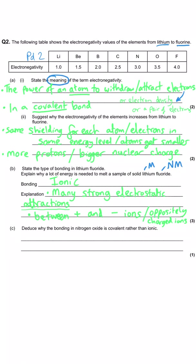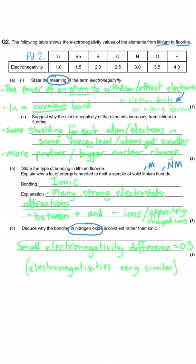The final part of this question says deduce why the bonding in nitrogen oxide is covalent rather than ionic. We have to look at the electronegativity that we've been given. Nitrogen has an electronegativity of three and oxygen has got an electronegativity of 3.5. We don't need to memorize these data but what we need to appreciate is that 3 and 3.5 are really similar, the difference is only 0.5. That's all that we need to say for this mark: it's covalent because the electronegativity difference is very small or they have similar electronegativities.